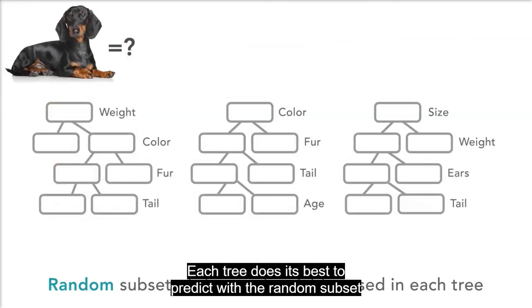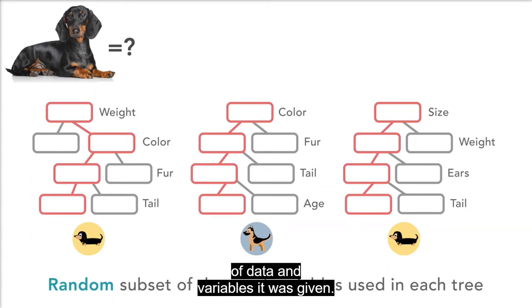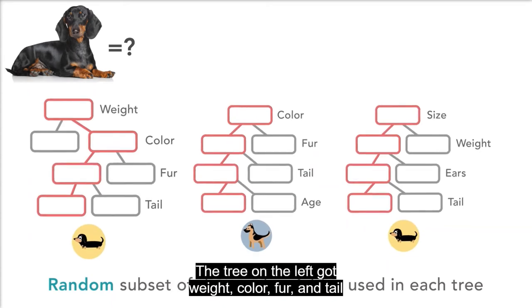Each tree does its best to predict with the random subset of data and variables it was given. The tree on the left got weight, color, fur, and tail, and correctly identified the new dog as a dachshund.